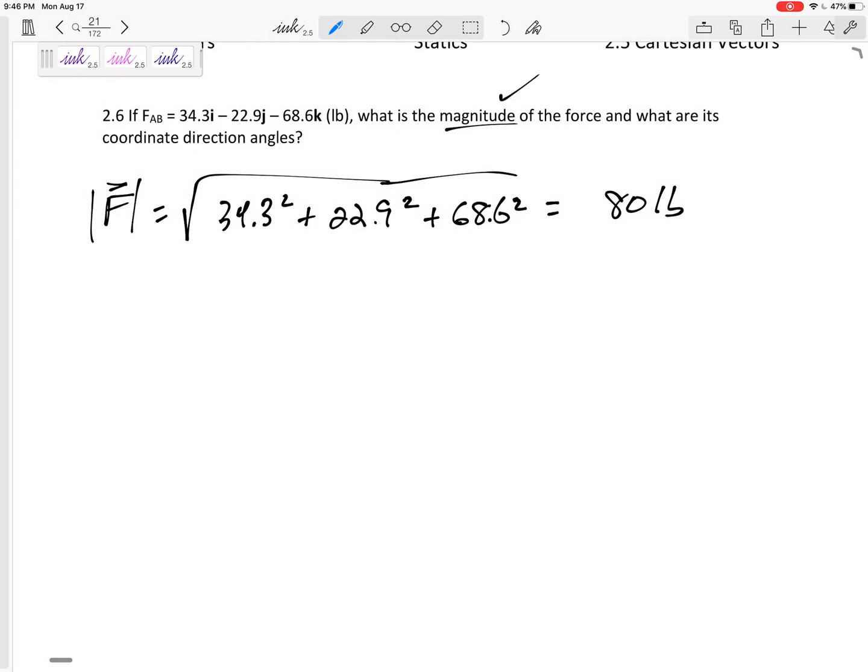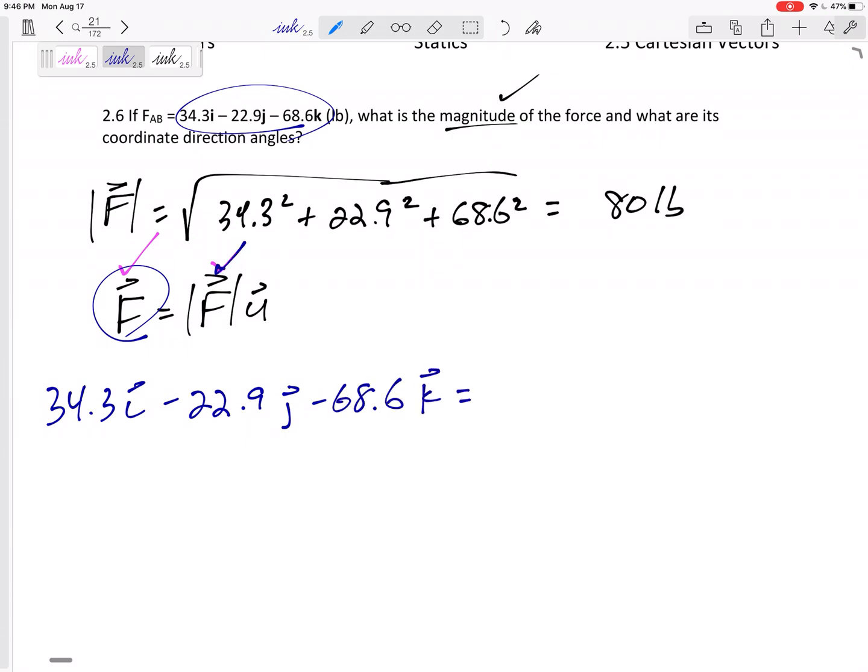All right, now what are its coordinate direction angles? Well, how do I organize my thoughts and my problems? F equals Fu. So in this case, I know F and I know the magnitude and I'm just trying to find u. So let's write out this equation. F written in ijk form is this, 34.3 in the i minus 22.9 in the j, 68.6 in the k equals magnitude 80. And what is u? u is cosine alpha i plus cosine beta j plus cosine gamma k.